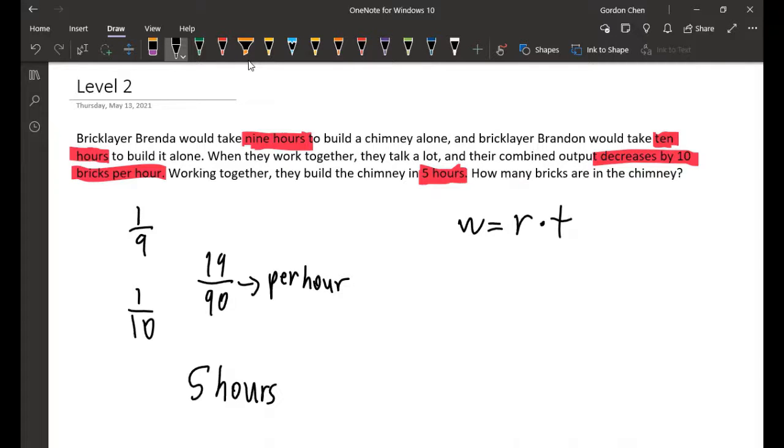So we have the total amount of work they do, we say that the total amount of bricks, we say it's B, and the rate we have is 19 over 90, and then that's times B. And when they work together, they talk a lot, and the productivity decreases by 10, and we multiply it by the time, which is 5.